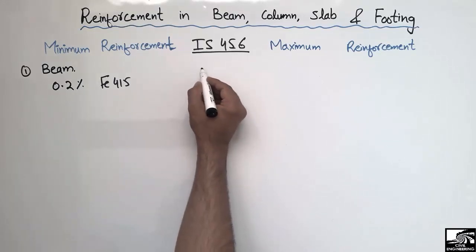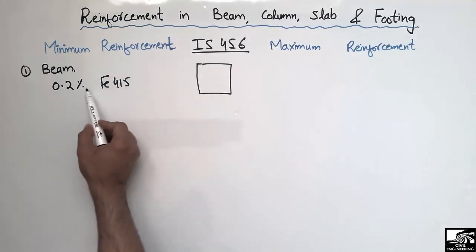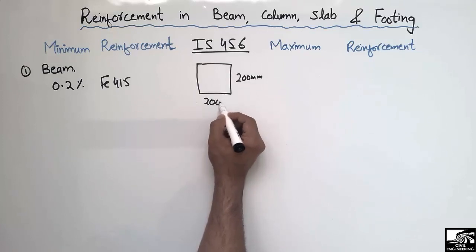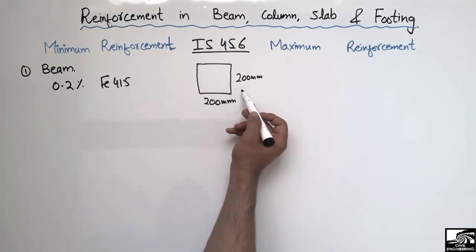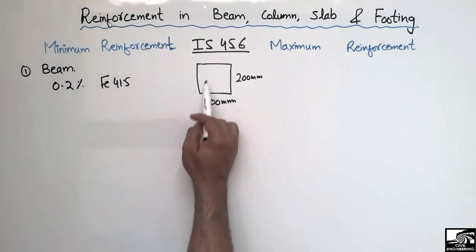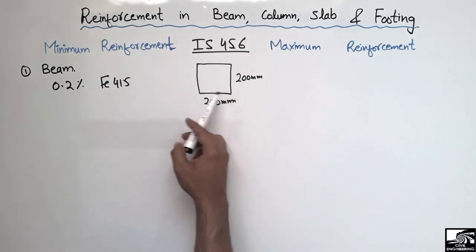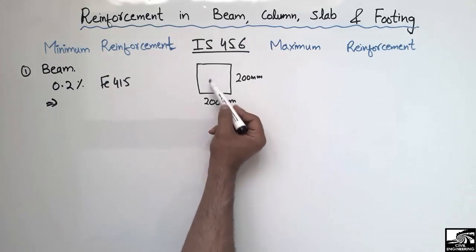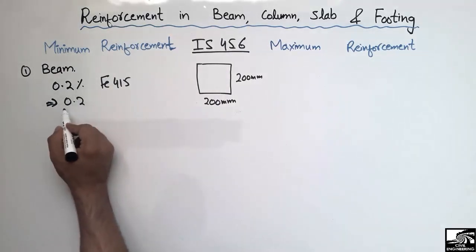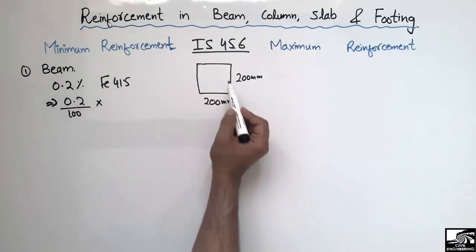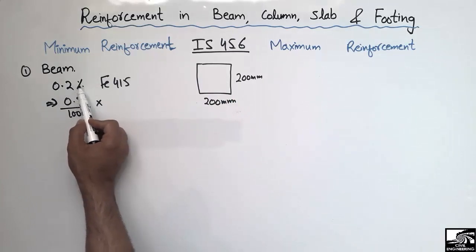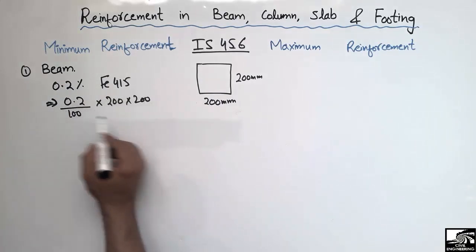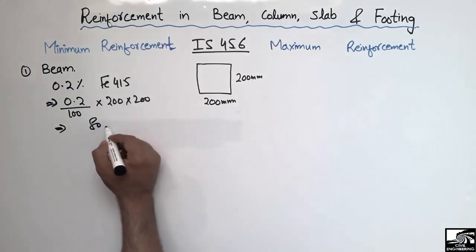Let's consider an example to explain this 0.2 percent. Consider a beam cross-section that is 200 mm by 200 mm — a square cross-section. The minimum reinforcement requirement for such a beam should be equal to 0.2 percent of this cross-section area. So the area of minimum reinforcement equals 0.2 divided by 100, multiplied by the cross-section area. That gives us 0.2/100 × 200 × 200.